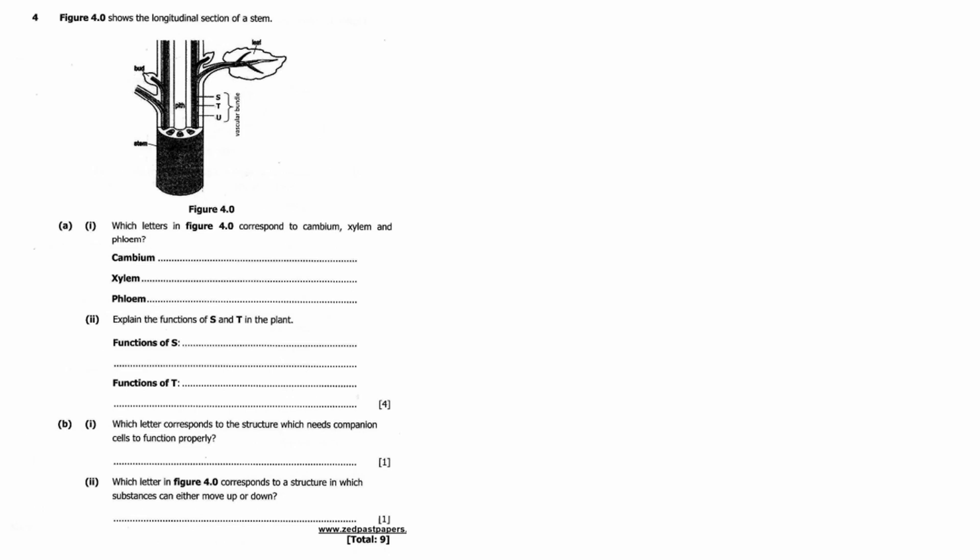Which letters in Figure 4.0 correspond to cambium, xylem, and phloem? Explain the functions of S and T in the plants. Which letter corresponds to the structure which needs companion cells to function properly? Which letter in Figure 4.0 corresponds to a structure in which substances can either move up or down?